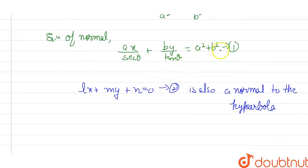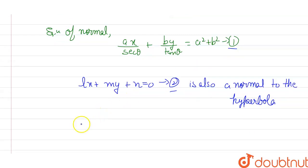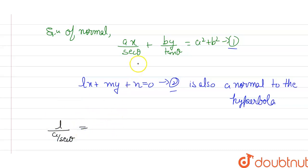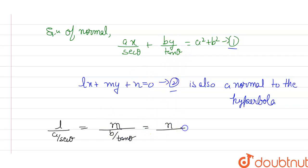Comparing equation number one and equation number two, the coefficient ratios should be equal to each other. So this can be written as: L divided by A over sec theta equals to M divided by B over tan theta equals to N divided by A squared plus B squared. Note that the A squared plus B squared term on the right-hand side becomes negative when moved to the left side, so we write a minus sign before it.